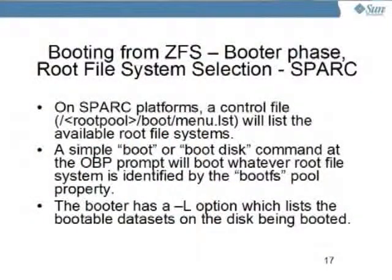On SPARC platforms, we also use a file called menu.lst, just to keep it consistent, even though we don't have Grub on SPARC. It also lists the available root file systems. We don't have a menu capability on SPARC like Grub, so what we've implemented instead is that if you simply type 'boot' or 'boot disk', the booter will find the value of the bootfs pool property and boot that dataset. But if you want to boot another dataset, you can use the minus L option - 'boot -L' - and it will give you a list of the available datasets that can be booted and show you exactly what to type in order to boot the particular dataset you want as your root file system.